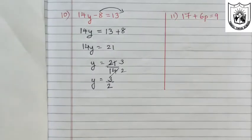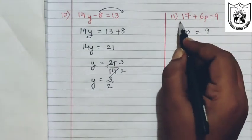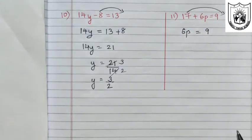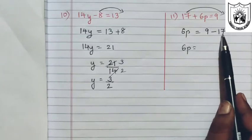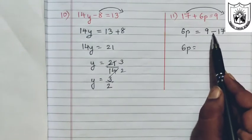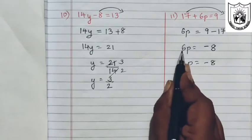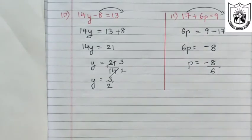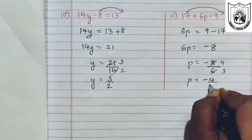Let us now solve the eleventh problem: 17 plus 6p equals 9. We keep 6p on the left hand side. Positive 17 transposed to the right becomes negative 17. So 6p equals 9 minus 17, which gives negative 8. Transposing 6, it becomes divided by 6. Since 6 and 8 are divisible by 2, p equals negative 4 upon 3.